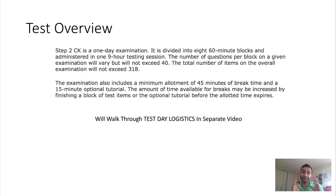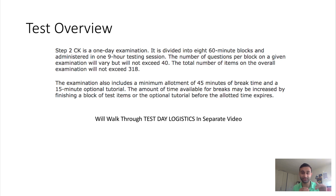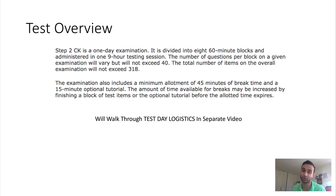Here is the overview of the test. Step 2 CK, unlike Step 1, is nine hours — Step 1 was eight hours. The biggest difference is instead of seven one-hour blocks, you have eight one-hour blocks, plus 45 minutes of break and a 15-minute tutorial. If you skip the tutorial, it's almost like you have eight hours of real testing with an hour of break that you can scatter along.